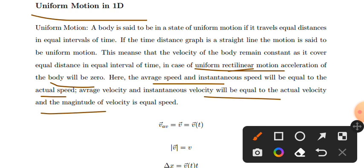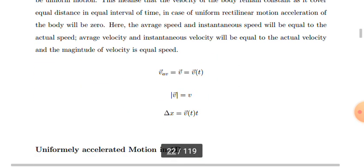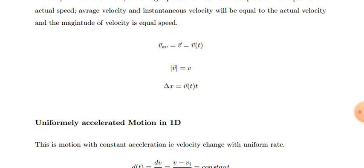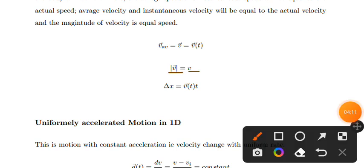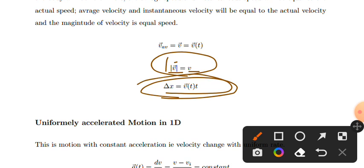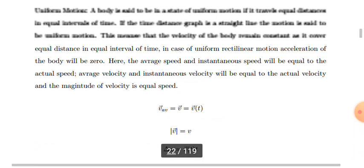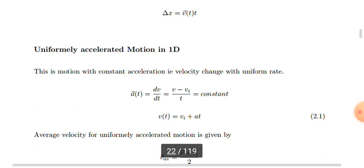In uniform motion, average speed and instantaneous speed will be equal to the actual speed. The magnitude of velocity equals the magnitude of speed. These are key concepts for uniform motion in one dimension.